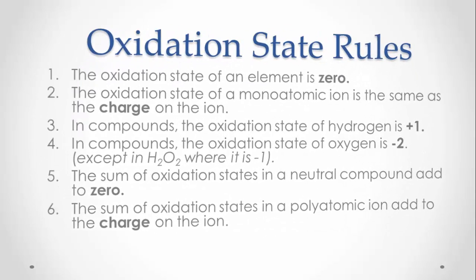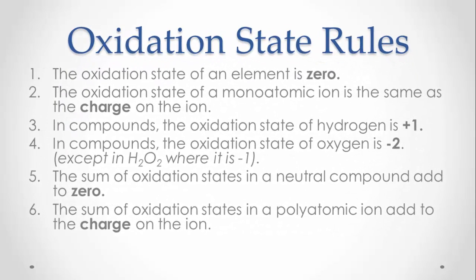In order to work out the oxidation state of atoms, we apply these six rules. You should have a copy of these rules written into your notes — if not, pause the video and either copy them down or take a screenshot. As you develop your understanding of electrons and bonding, you should review each rule to see how it applies, and then they will make more sense than just six rules to memorise. We will now look at each rule in turn and use some examples to illustrate them.